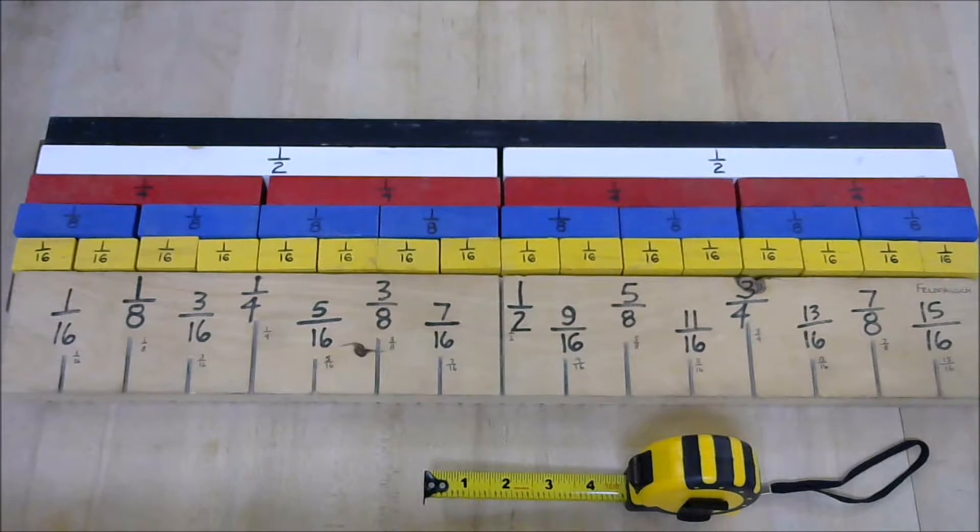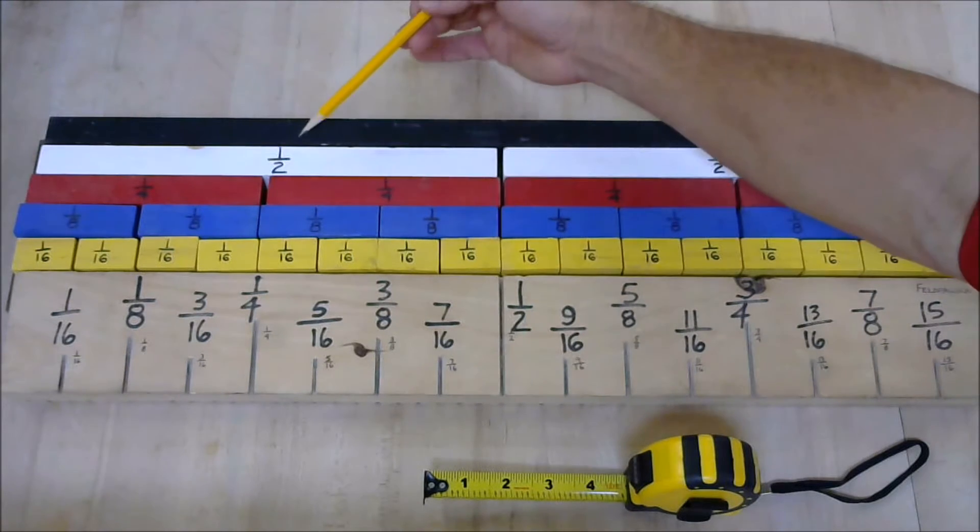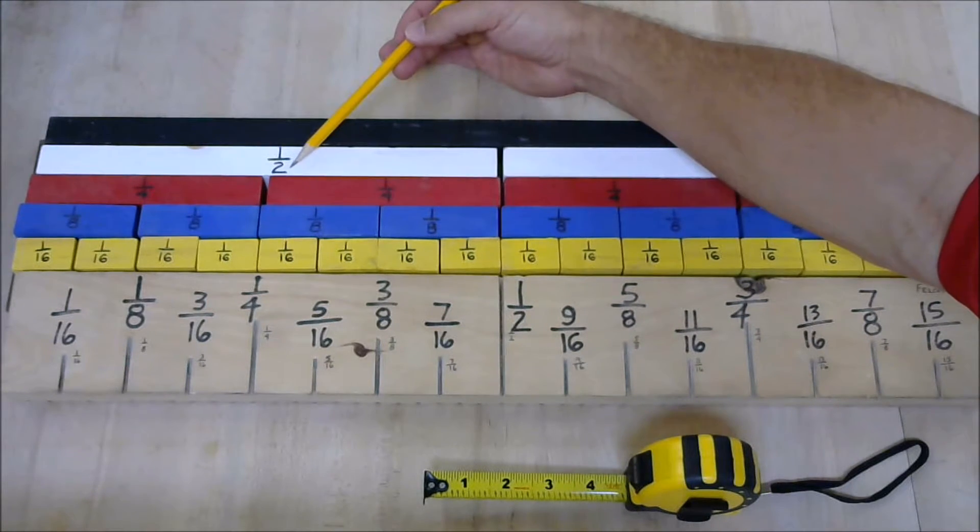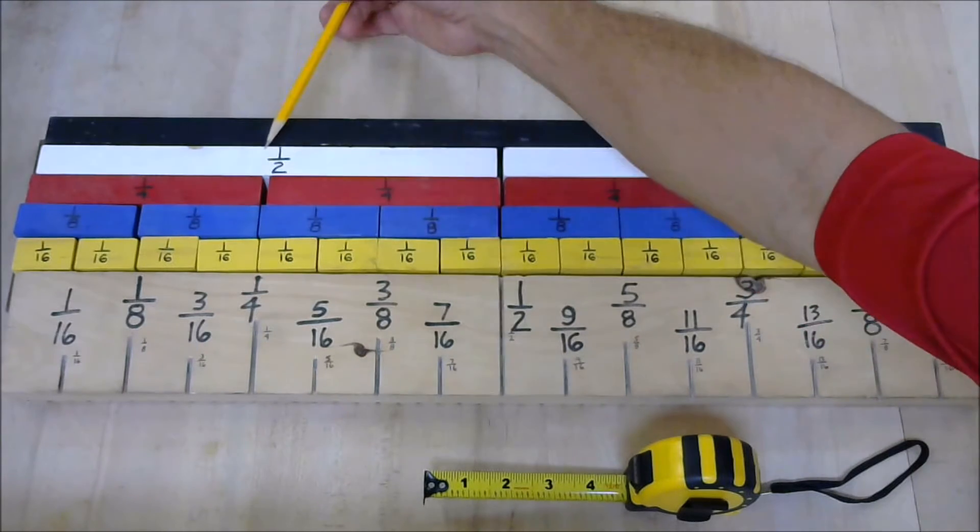So, what again is the easiest way to divide a fraction in half? We double the denominator. So, half of one-half, we double two to get four. Half of one-half is one-fourth.